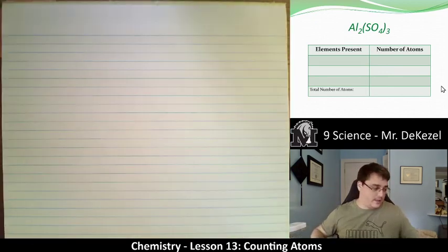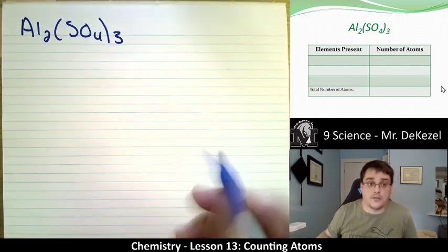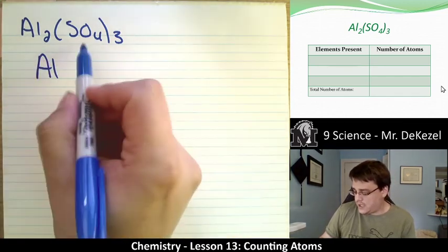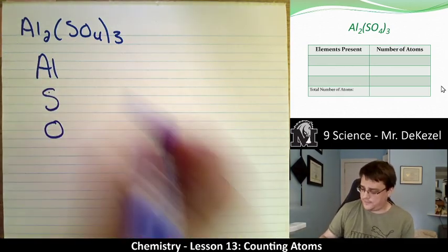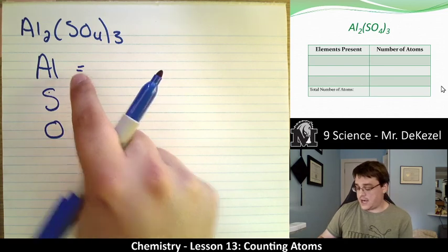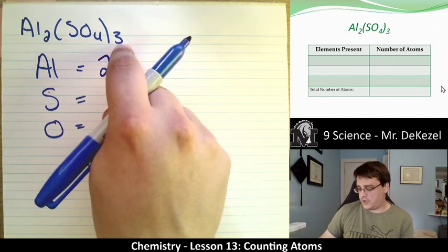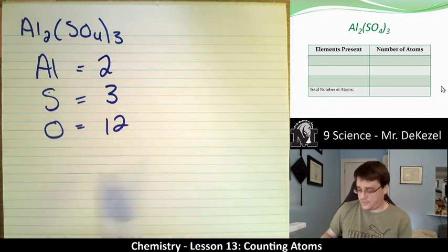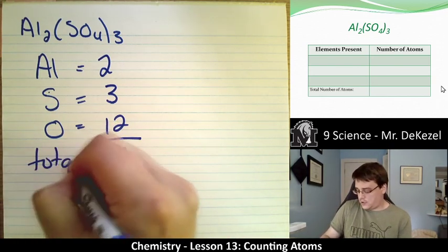We have a little bit more complicated one here. We have Al2(SO4)3. Let's write out our different elements that we have. We have aluminum, and then within here we have sulfur and oxygen. Aluminum is outside the bracket, so we can treat it on its own. There are two aluminums, and then there would be one sulfur, but we have three on the bracket, so we multiply that by three for three total. And then four times three is 12, and we have a total of 12 plus five is 17 atoms.